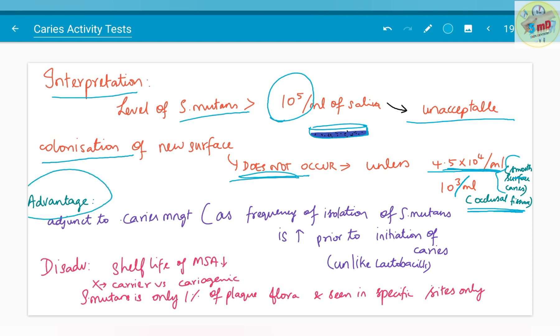The main advantage of this streptococcus mutans test is that it will act as an adjunct to caries management, as frequency of isolation of streptococcus mutans is increased prior to initiation of caries rather than progression of caries, unlike lactobacillus. The main disadvantage is that the shelf life of MSA agar is very less, and we cannot differentiate between carrier and cariogenic patients. Streptococcus mutans is only 1% of the plaque flora and seen in specific sites only, which will limit the advantages.